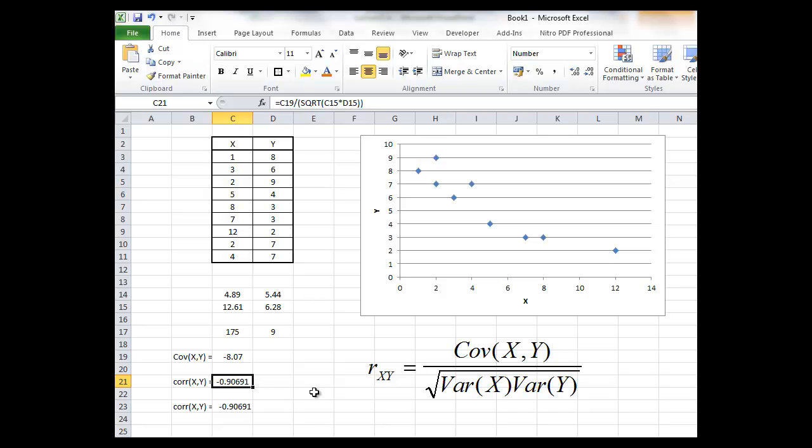SQRT takes the square root and that's exactly the same result as you can get directly from Excel by applying what's called the COREL function which just gives you a correlation coefficient. Notice that the value of the correlation coefficient is minus 0.9. The minimum possible value for a correlation coefficient is minus 1. This is very close to that number.